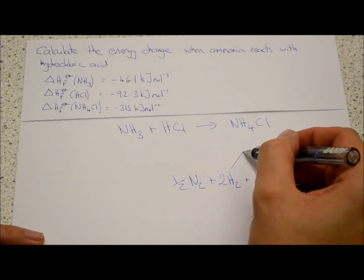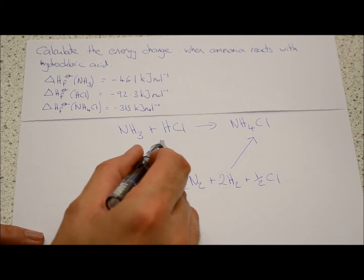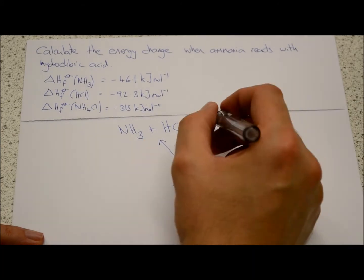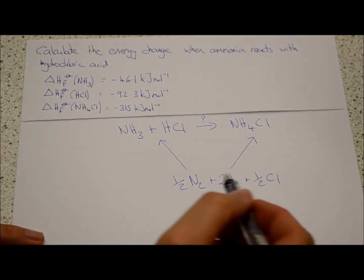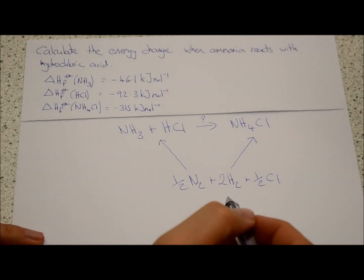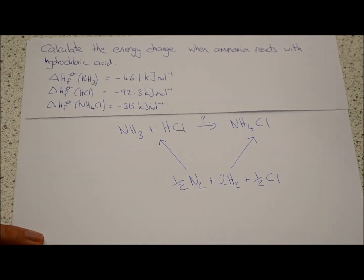We're going to use these to calculate this path and to calculate this path, and we'll be able to work out this path. So to start off with, to make one mole of ammonia, it'll be minus forty-six point one kilojoules per mole.